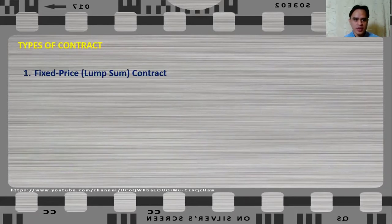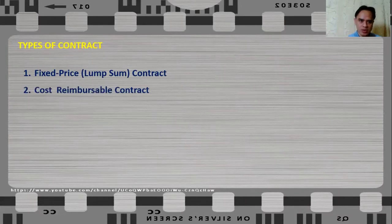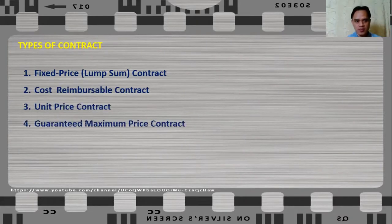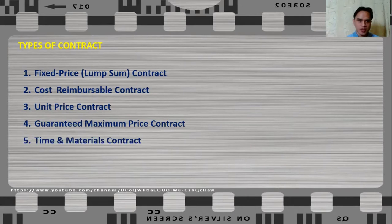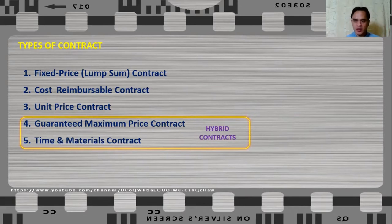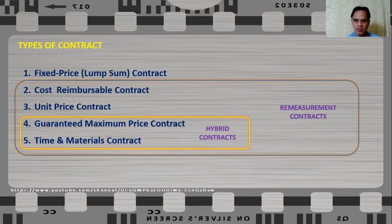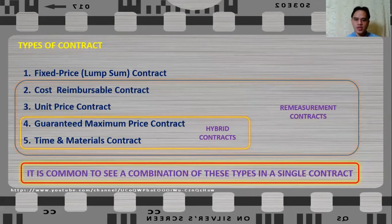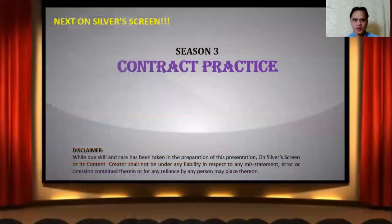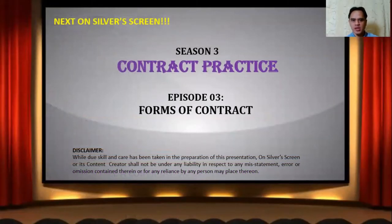Let us review the types of contract: fixed lump sum contract, cost reimbursable contract, unit price contract, guaranteed maximum price contract, and time and materials contract. The GMP and time and materials contracts are what we call hybrid contracts because they have characteristics of the other types. Only the fixed price contract is lump sum — the rest are remeasurement contracts. It is also common to see a combination of these types in a single contract. Join me next on Silver Screen as we discuss forms of contract for episode 3 of our contract practice season.